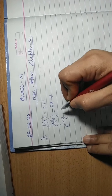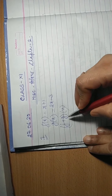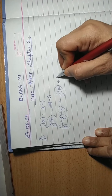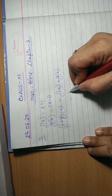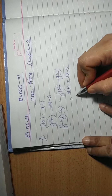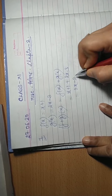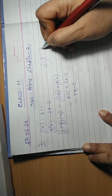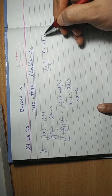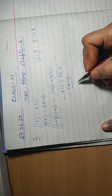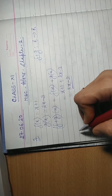First of all, find f+g. The definition gives us (f+g)(x) = f(x) + g(x). f(x) is x+1 and g(x) is 2x-3. So 2x+x = 3x, and 1-3 = -2. Therefore (f+g)(x) = 3x - 2. Since both f and g map R to R, the domain and range are both R, so no special mention needed.